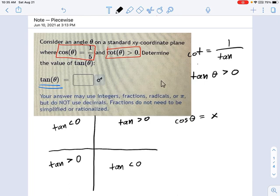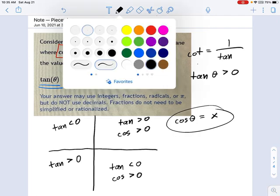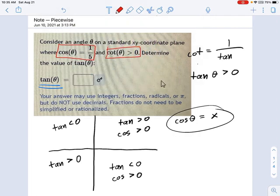Now which of these quadrants has positive cosine? Remember, cosine is the x value, so that's going to be over here. Cosine is greater than 0. So where do I satisfy those two initial conditions? Positive cosine, positive cotangent. It's got to be in quadrant 1.